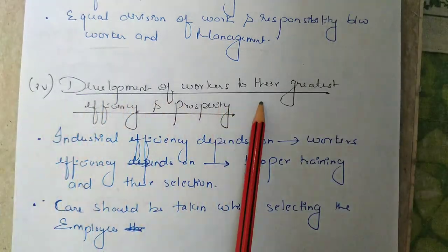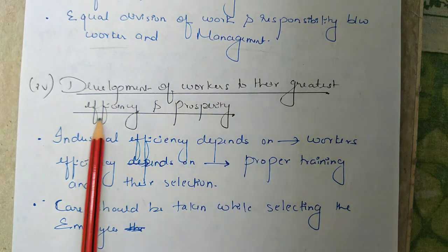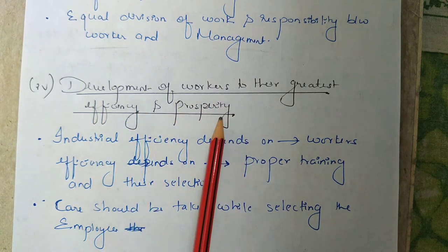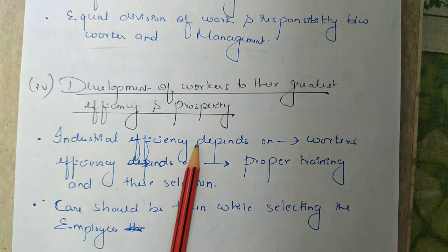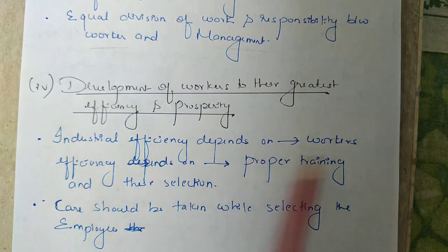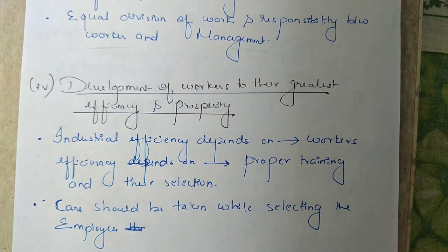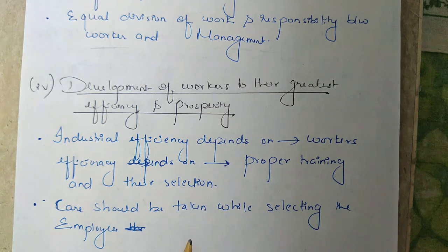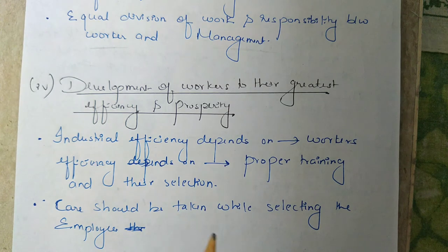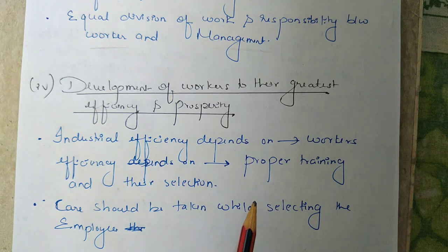The last principle is development of workers to their greatest efficiency and prosperity. According to this principle, industrial efficiency depends on workers' efficiency, and workers' efficiency depends on proper training and their selection. Taylor insisted that care should be taken while selecting employees, and after selecting them, they must be given jobs according to their qualification. Employees must also be sent for training from time to time to update their knowledge. All this will ensure the greatest efficiency and prosperity for both the company and the worker.